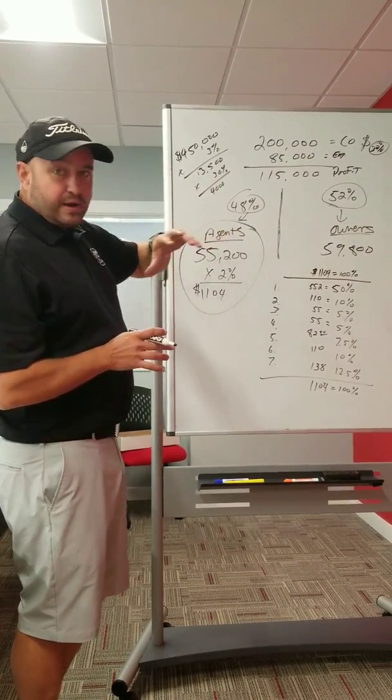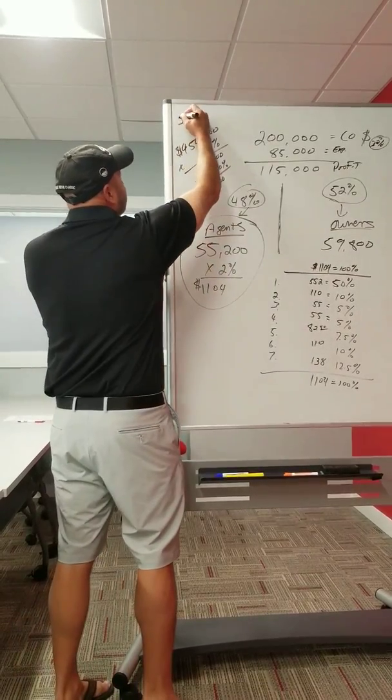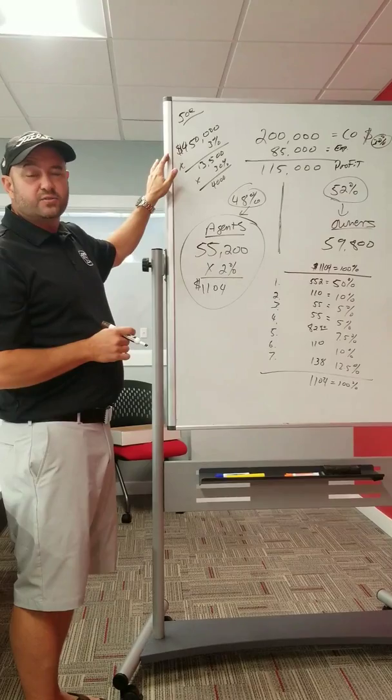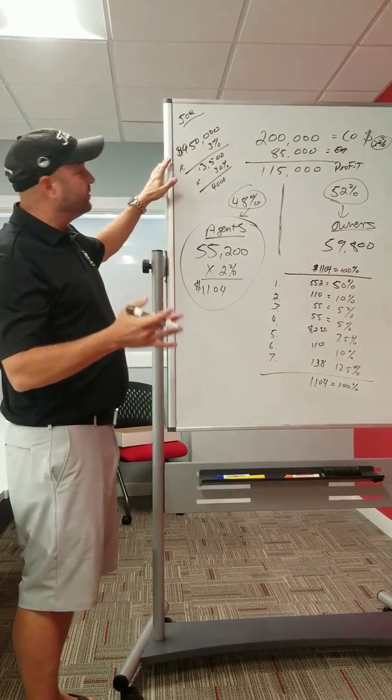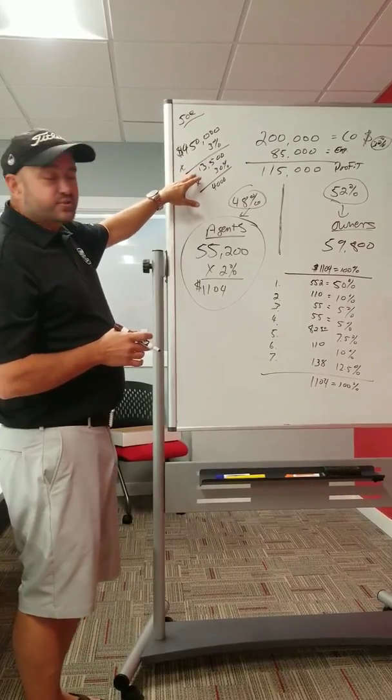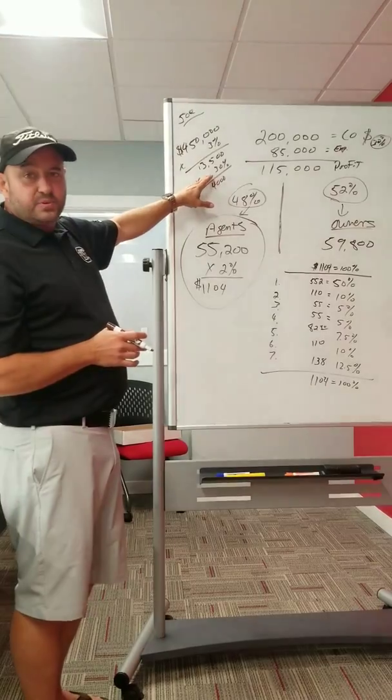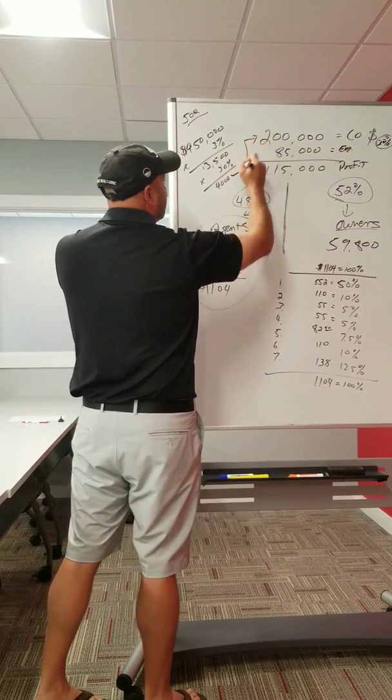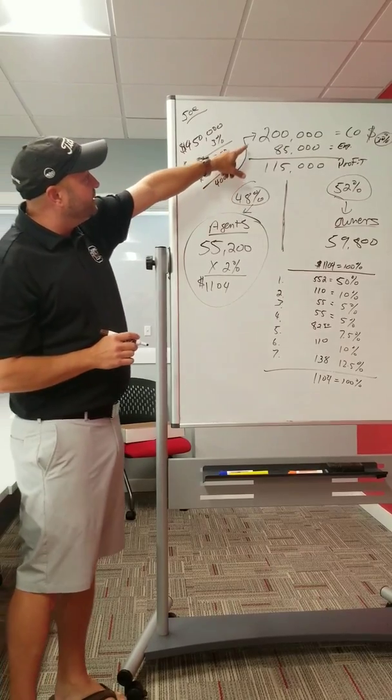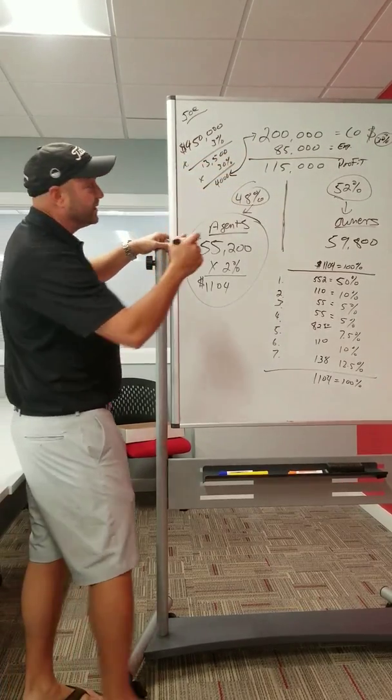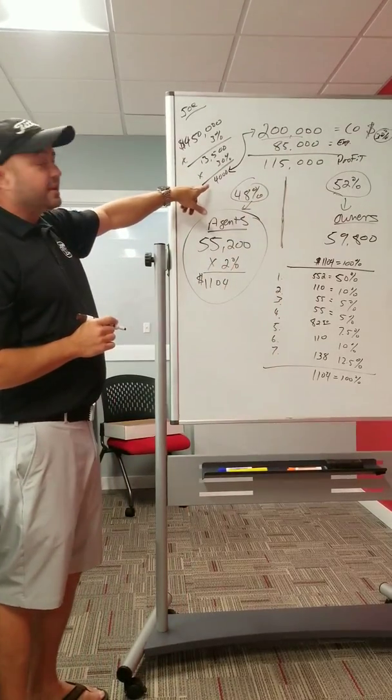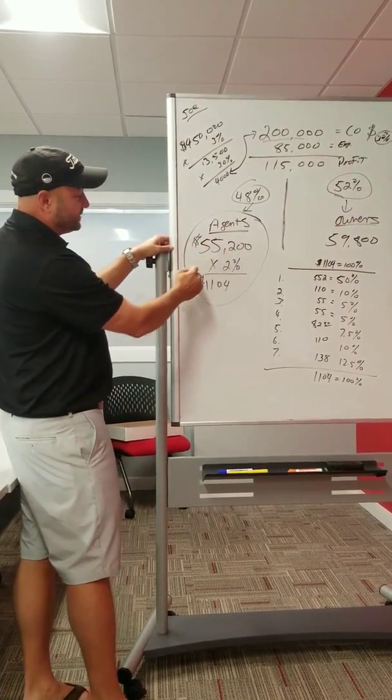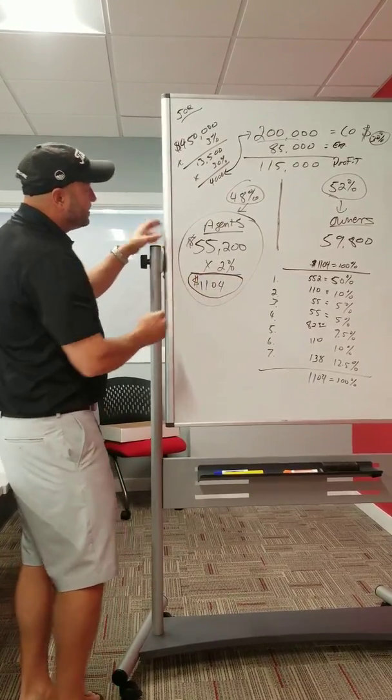So here's what happens. The agent, let's say Joe. You refer Joe to Keller Williams. Joe comes in. In his first month, he closes $450,000 in real estate. One house, five houses, whatever. He gets a 3% commission. The total is $13,500 in commissions. We take our 30%. 30% of that's about $4,000. We look at what percentage Joe paid in. So what percentage Joe paid of this $200,000? Well, 1% is $2,000. So Joe paid exactly 2% of our company dollar.